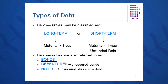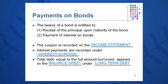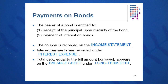Debt securities can be classified as long-term or short-term. Long-term typically matures in greater than one year; short-term less than one year, sometimes called unfunded debt. Other names for debt securities include bonds, debentures — which are unsecured bonds — and notes, which are typically short-term debt. If you hold a bond, you're entitled to receipt of principal at maturity plus regular interest payments. From a financial statement viewpoint, the coupon or interest payment is shown under interest expense on the income statement, and the total debt issued is shown on the balance sheet under long-term liabilities.